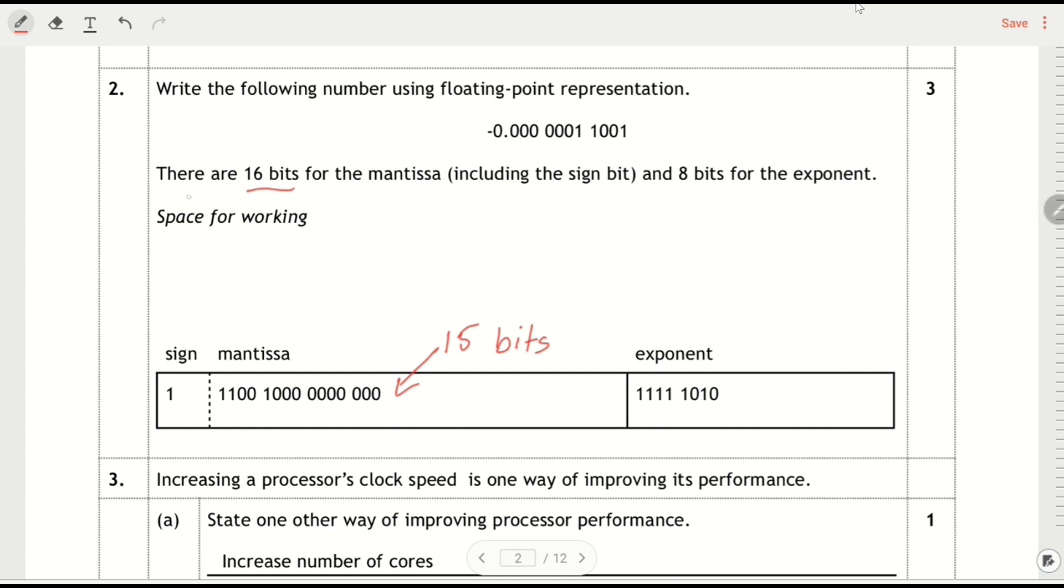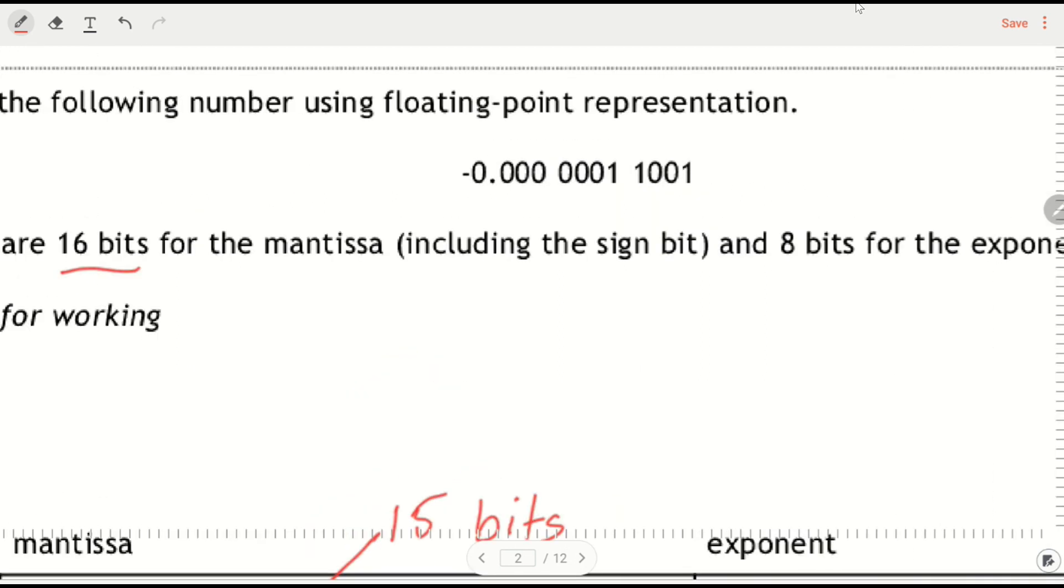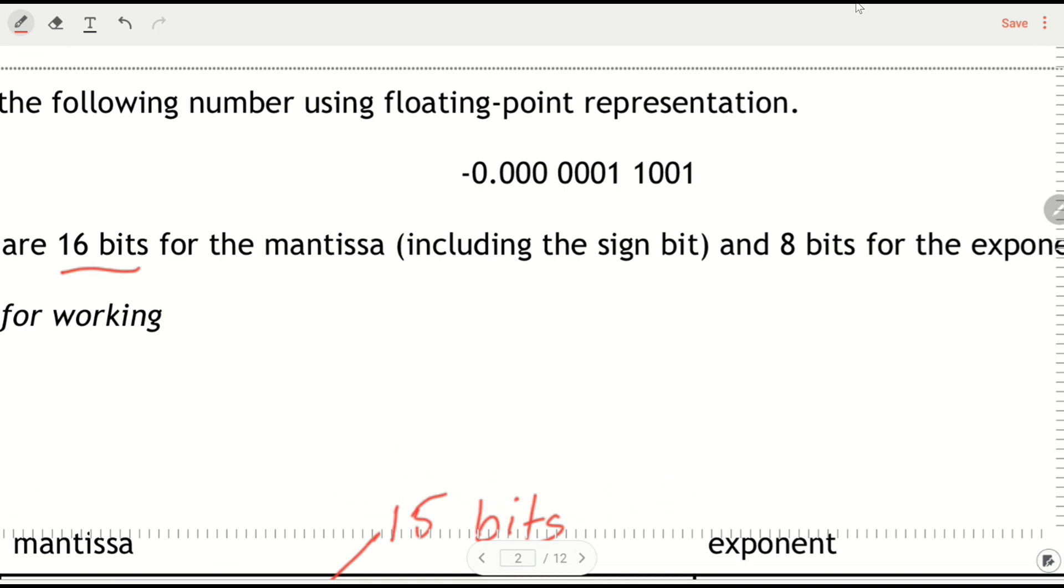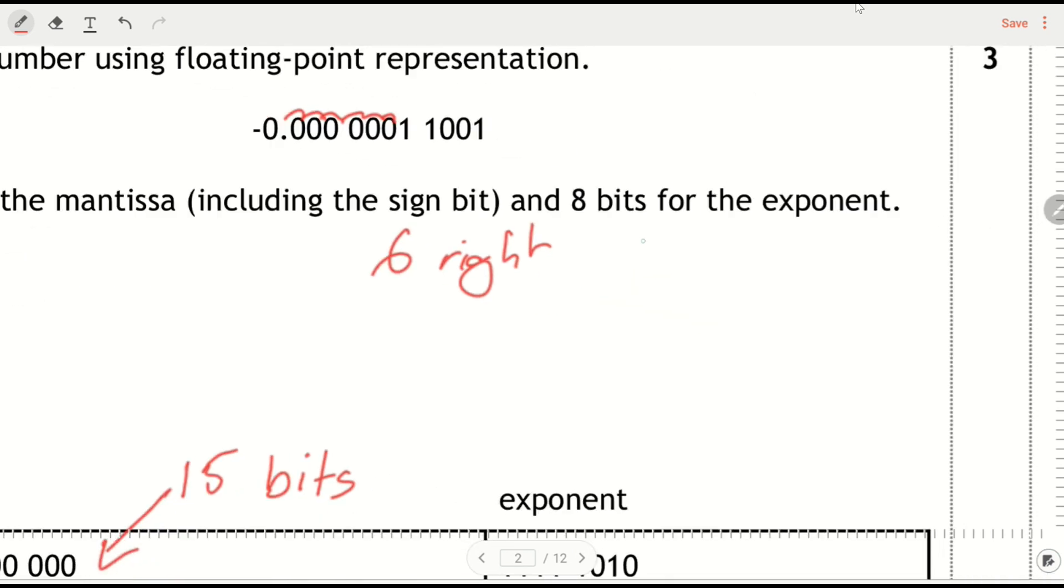My sign bit is because this is a negative number. So that sign is because it's a negative number, that's a 1. And how do I get my exponent? Well, I need to put the point before the first one. So I'm going 1, 2, 3, 4, 5, 6. So I'm going 6 places to the right. So first of all, I'll do 6.